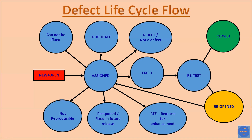The fourth scenario is when the developer tries to reproduce the bug to understand and fix it, but finds that the bug is not reproducible. The developer attempts to reproduce it two, three, or several times, but still cannot reproduce it. In that case, the developer marks the bug as 'Not Reproducible'.